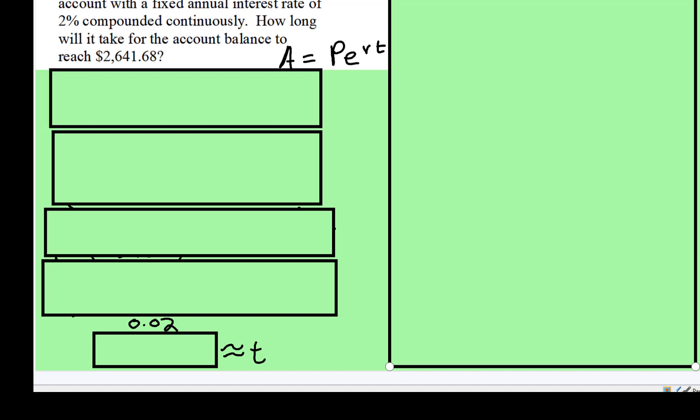Okay, we're still working with continuously compounding interest problems, and here's the equation. This time we're either going to be missing interest rate or time, and it looks like it's time. How long will it take?